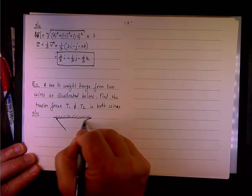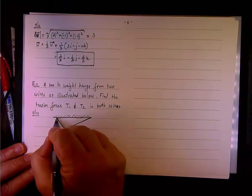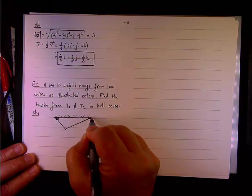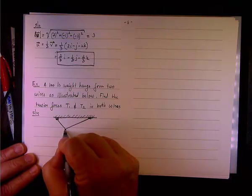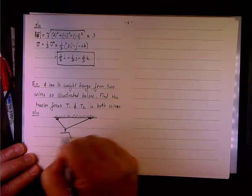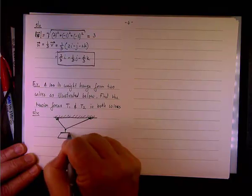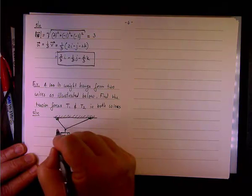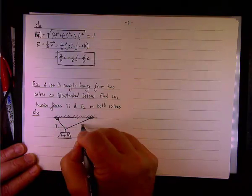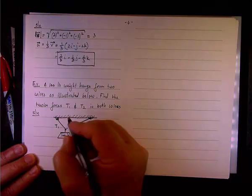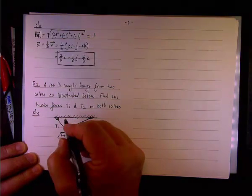You have a weight that's not really in the center. It's hinged here, the wires are connected, hinged to the ceiling, here and here. This is the weight of the 100-pound. And here's the tension force, T1 on this wire, T2 on this wire.